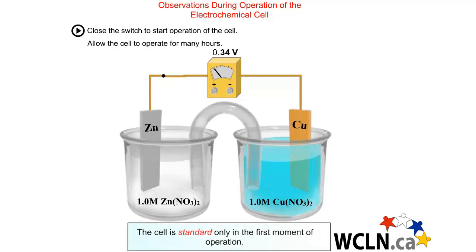In this electrochemical cell, a zinc electrode is dipped into a solution of zinc nitrate in the left beaker and a copper electrode is dipped into a solution of copper 2 nitrate in the right beaker.